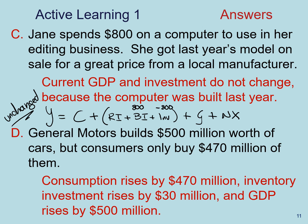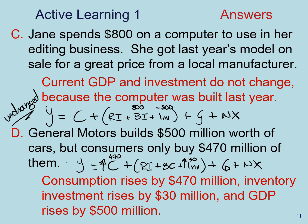For example D: General Motors builds $500 million worth of cars, but consumers only buy $470 million of them. Consumption goes up by $470 million, and inventory increases by the remainder — $30 million. That gives us a total increase in GDP of $500 million. We have to count all the economic activity; we are just classifying it in different buckets. All those buckets are mutually exclusive, so when we add them up together, it gives us the right number.